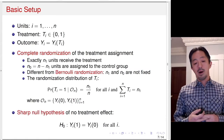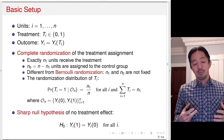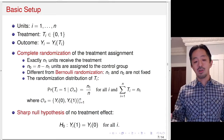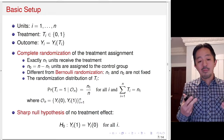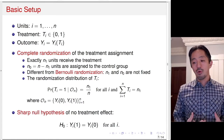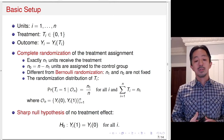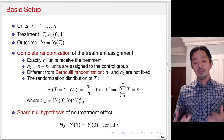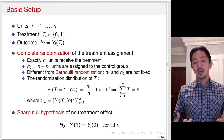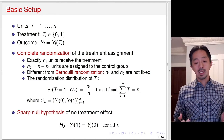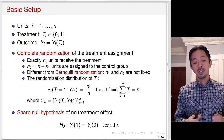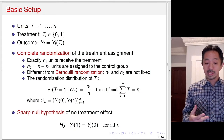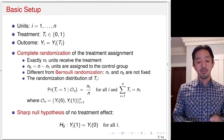The sharp null hypothesis is a null hypothesis about each individual unit — not the average outcome. We call it 'sharp' because it specifies the treatment effect for every unit. The sharp null hypothesis of no treatment effect states that for every unit i, Y(1) equals Y(0): treatment has zero effect. This is the basic setup of the permutation test.